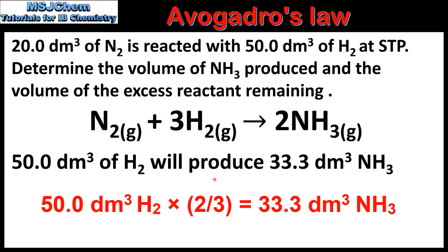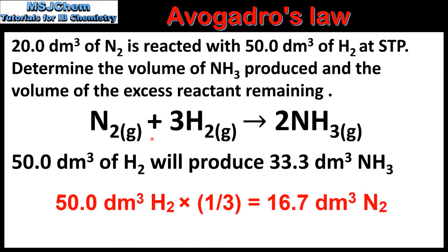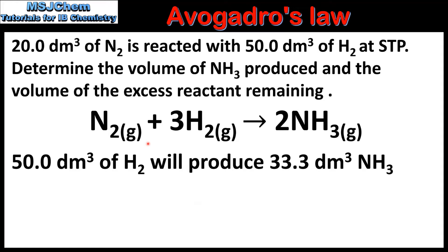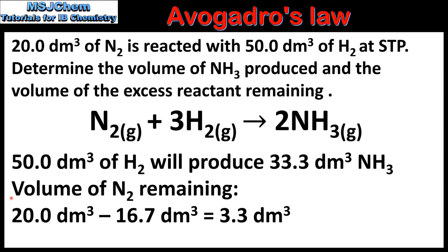This means that 50 cubic decimetres of hydrogen will produce two thirds as much ammonia, which is 33.3 cubic decimetres. Next we'll calculate the volume of the excess reactant remaining. The molar ratio of nitrogen to hydrogen is a 1 to 3 ratio, which tells us that 50 cubic decimetres of hydrogen will react with a third as much nitrogen, which is 16.7 cubic decimetres. So to calculate the volume of nitrogen remaining, we subtract 16.7 from 20, which gives us 3.3 cubic decimetres.